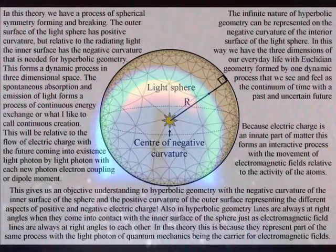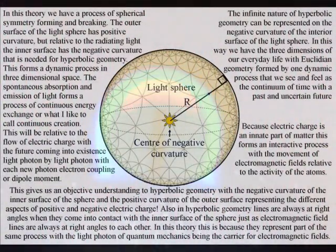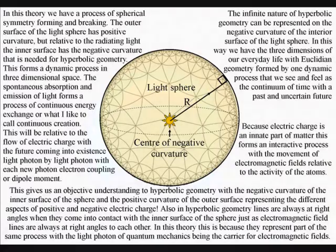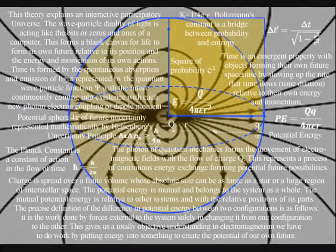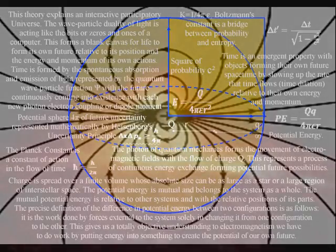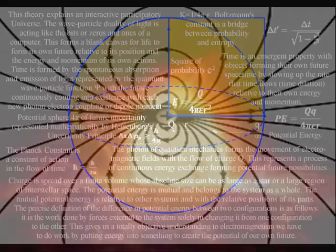This double nature can also be seen when the photosphere erupts, producing a solar flare in the form of a horizontal dipole loop of positive and negative charge. Positive and negative charge is an innate part of all matter.